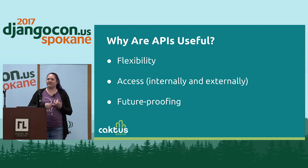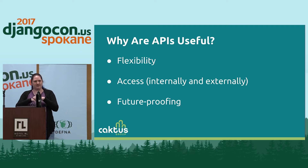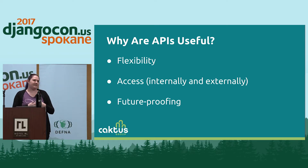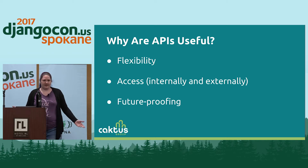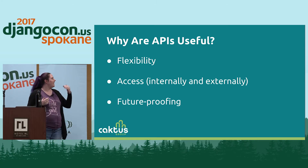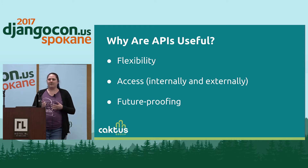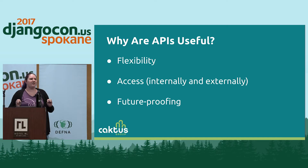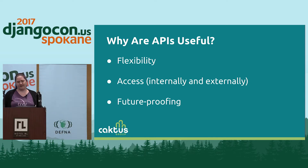We like APIs because they give us flexibility. Once you've got an API in place, you've got access to all those basic functions — reading your data, updating your data, et cetera — without the entire structure of what you expect the workflow to be. It also gives you more access, both externally and internally between two different pieces of code. And you can also use this for future proofing, making it easier to implement new things without as much complexity.